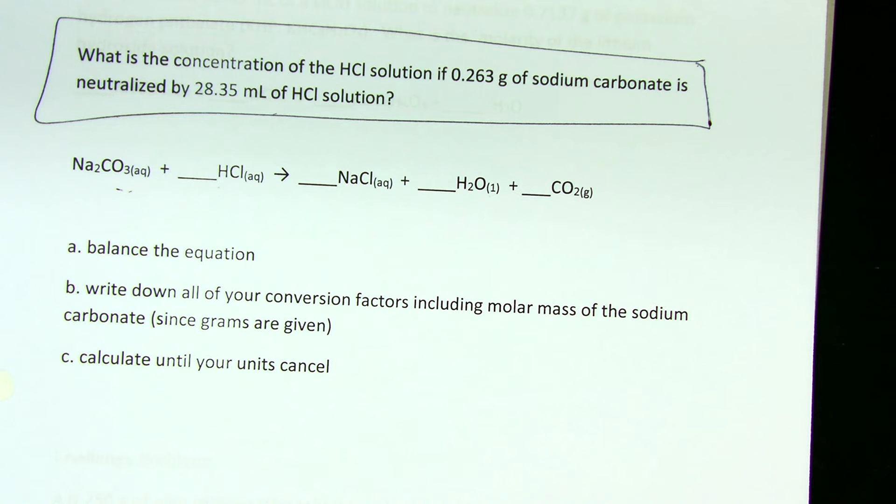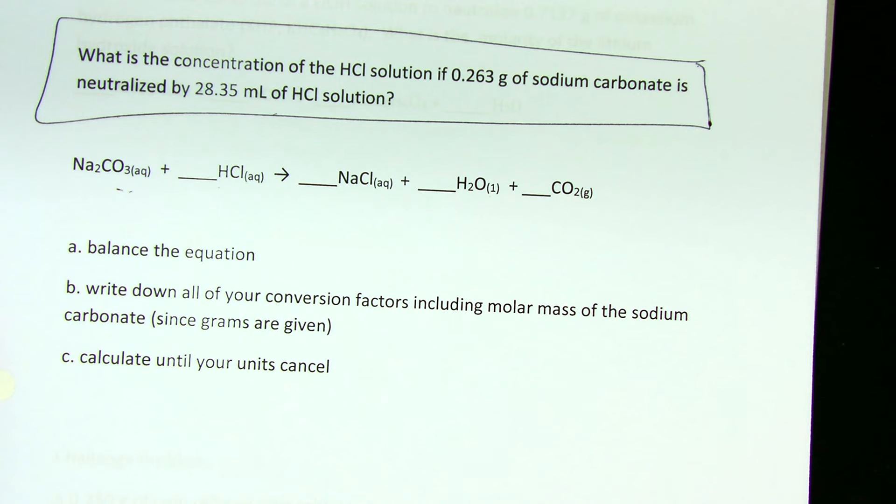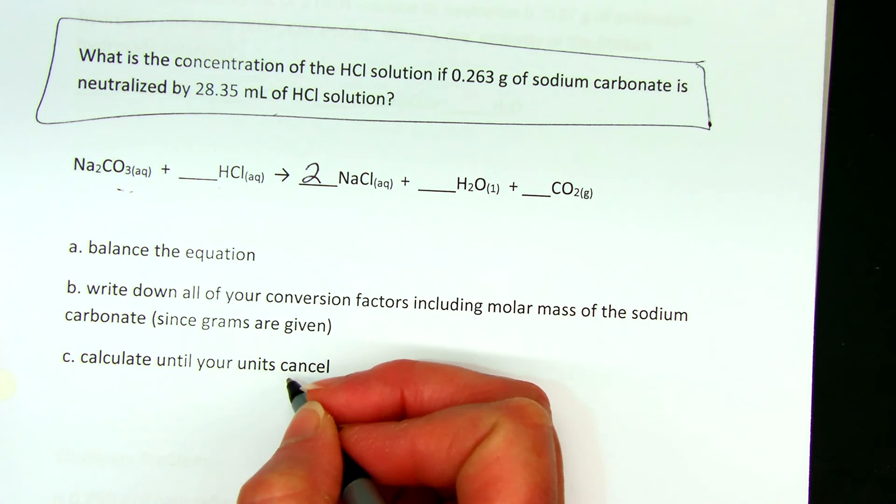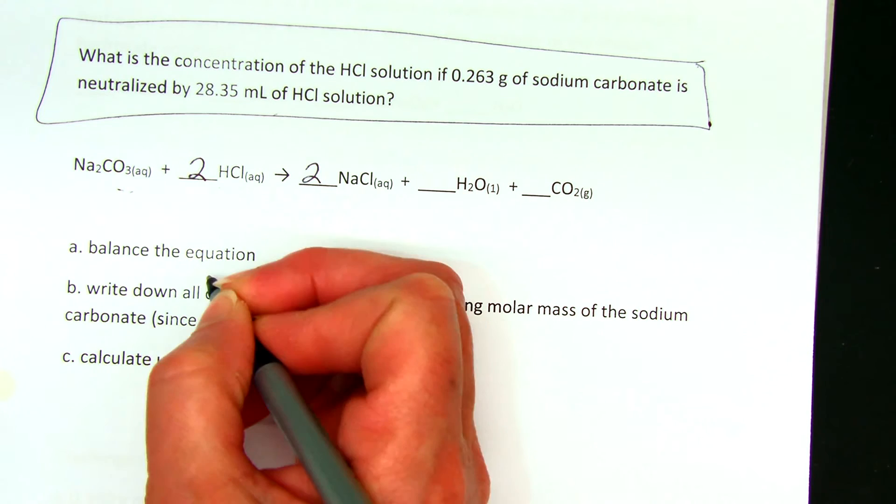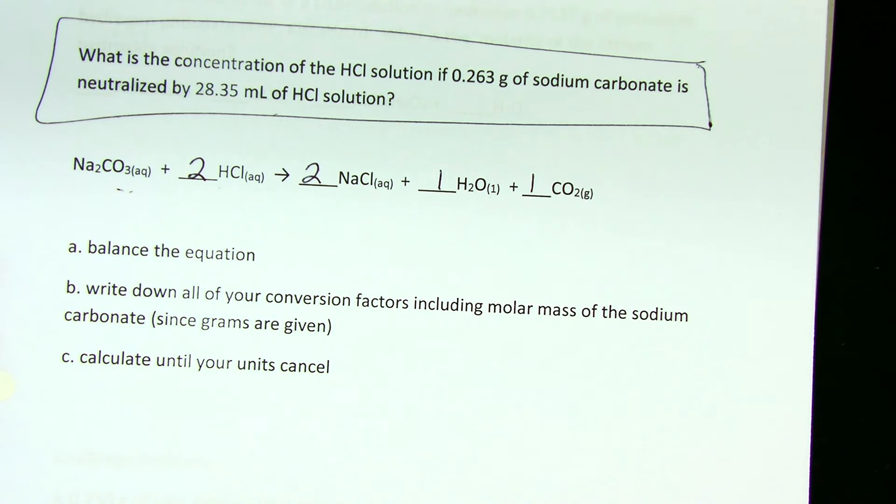Now once you have the equation, we need to balance the equation. That's always the first step. So I have two sodiums here, so I need two sodium chlorides. Now I have two chlorines, so I need two HCl, and I make one water and one carbon dioxide.